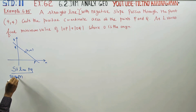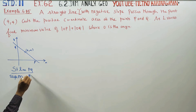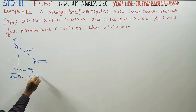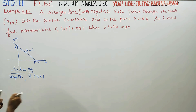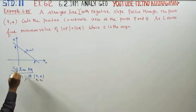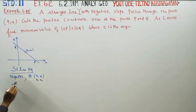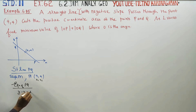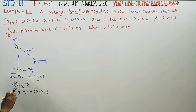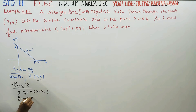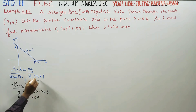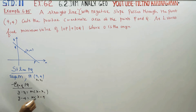Slope is equal to M. It passes through one point. What is the equation of PQ? y - y1 is equal to M into x - x1. This is the slope formula — one point, one slope formula. y - y1 = M(x - x1).